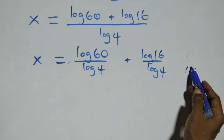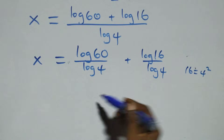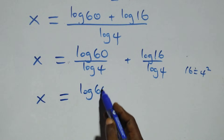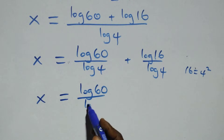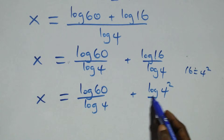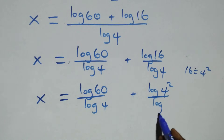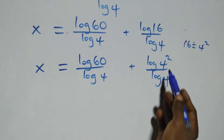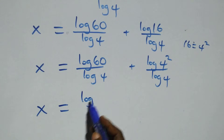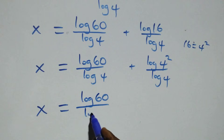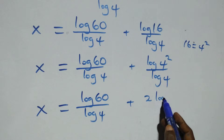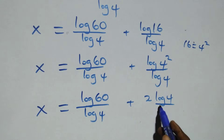From here, 16 can be expressed as 4 times 4, which is 4 squared. This becomes x equals log 60 over log 4 plus log 4 squared over log 4. We apply the power rule of logarithms, 2 comes out front, and we have x equals log 60 over log 4 plus 2 log 4 over log 4.